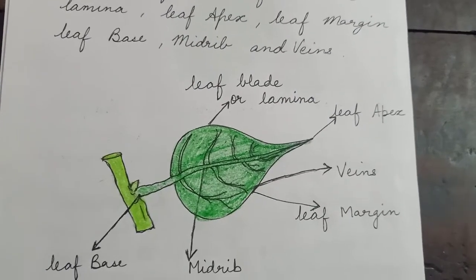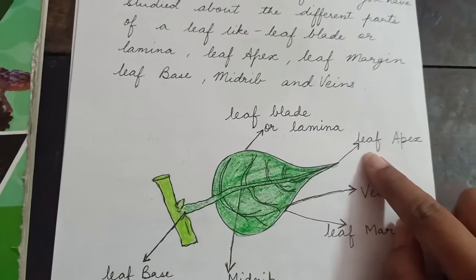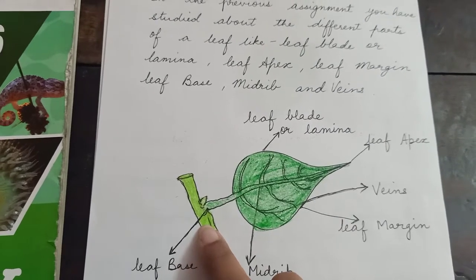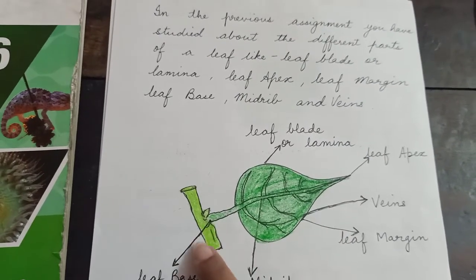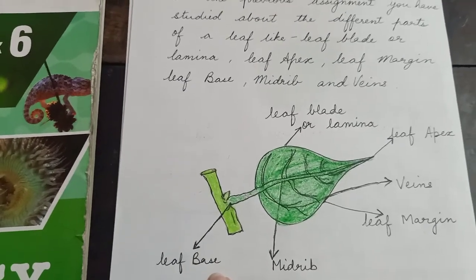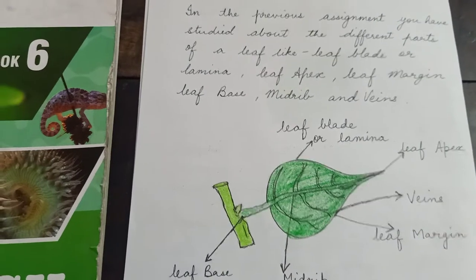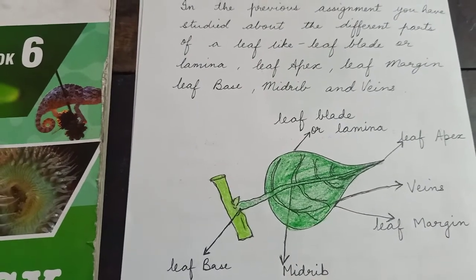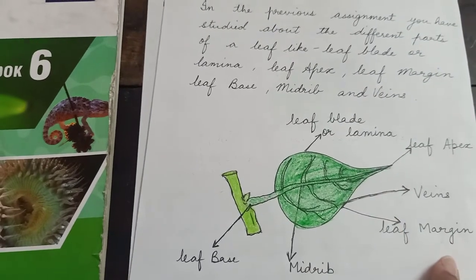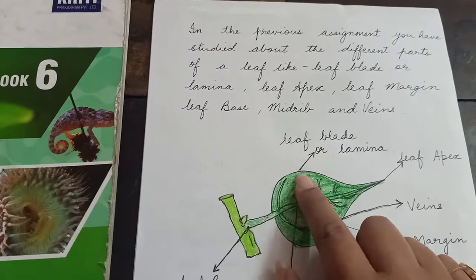You can easily see that the tip of the leaf is known as leaf apex, and the basal part of the leaf which is attached to the stem is known as leaf base. This center part of the leaf is known as midrib, and the outer part of the leaf is known as leaf margin.